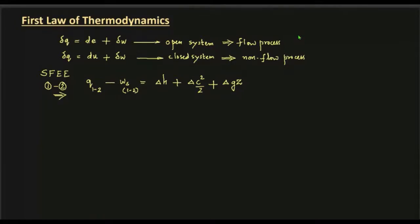Be aware that some questions specify their own sign convention — for example, stating that work done on the system is positive. Always use the sign convention specified in the question. Otherwise, the standard convention is: work done by the system is positive, work done on the system is negative, heat rejected is negative, and heat supplied to the system is positive.